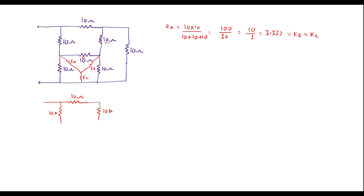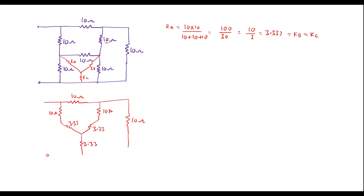Here we are supposed to replace this delta with R_A, R_B, R_C. So this is R_A, this will be R_B, and this will be R_C. The values are: this is 3.33 ohm, 3.33 ohm, and this is 3.33 ohm. Now all of this is connected to node B, and this is node A.